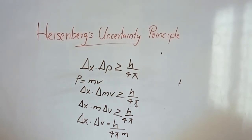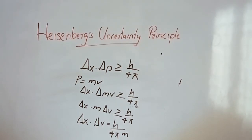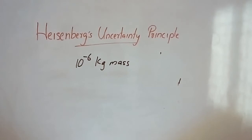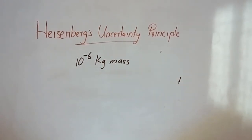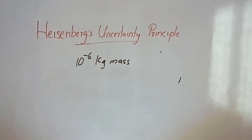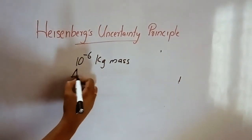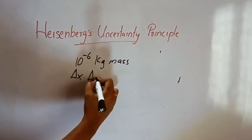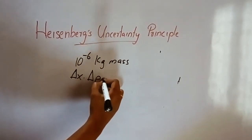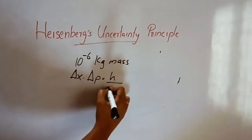Uncertainty in position and momentum will be easy to work with. We have two problems. If we take an object of mass 10 to the minus 6 kg with a given uncertainty, we apply the relation: Delta x times Delta v is equal to h by 4 pi.